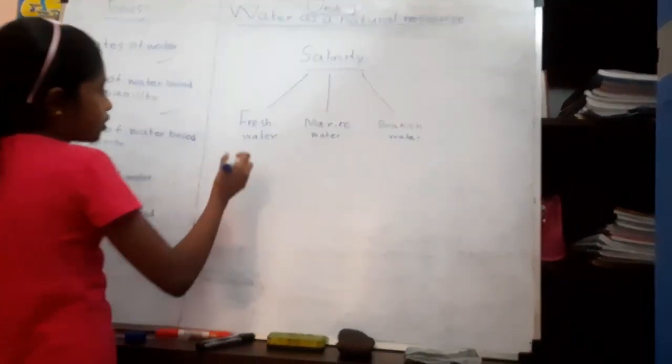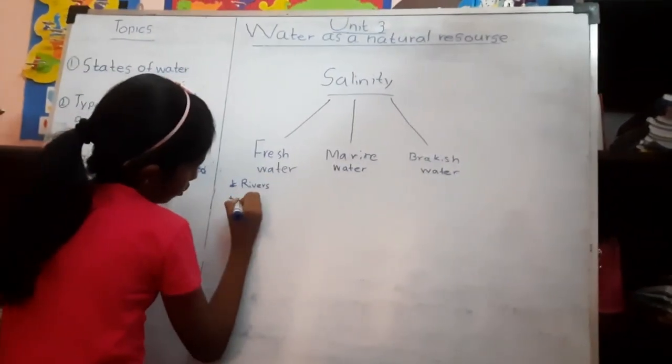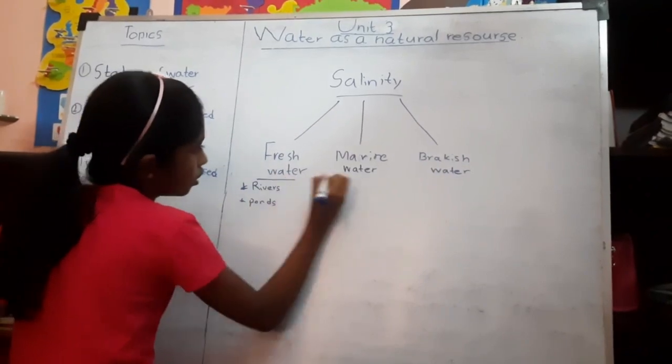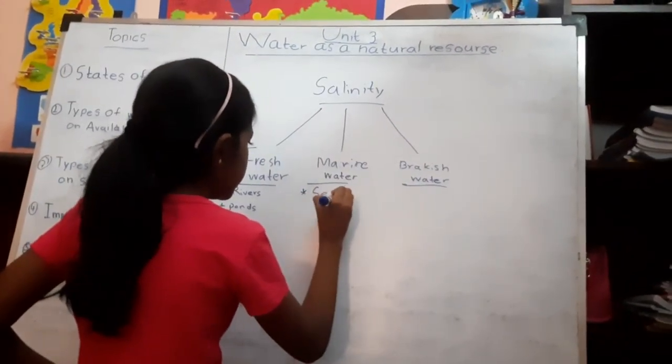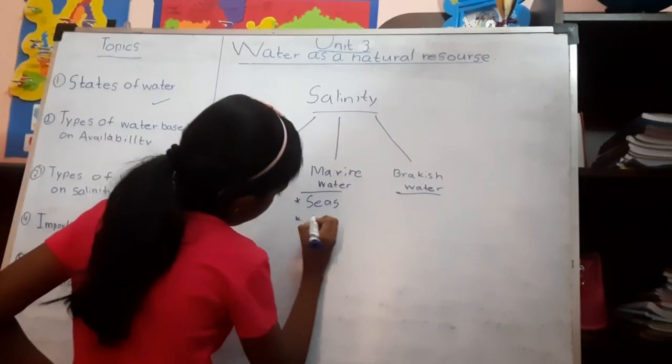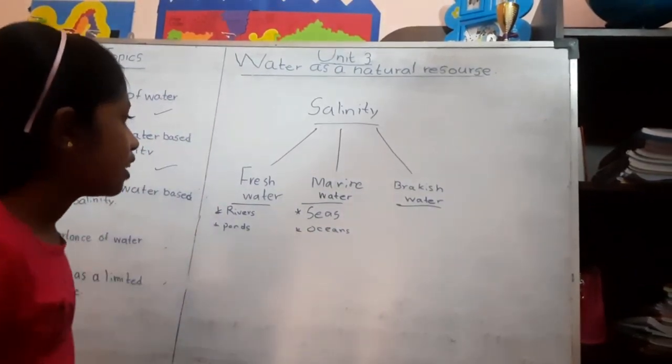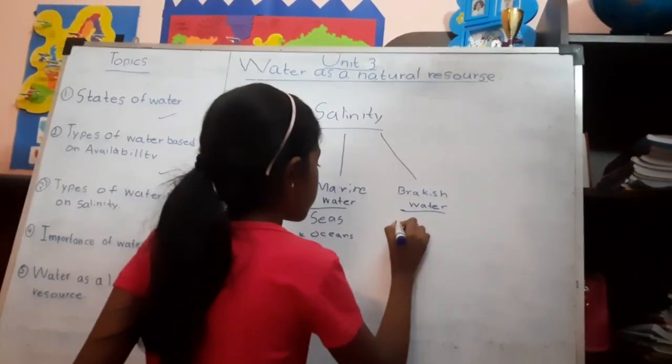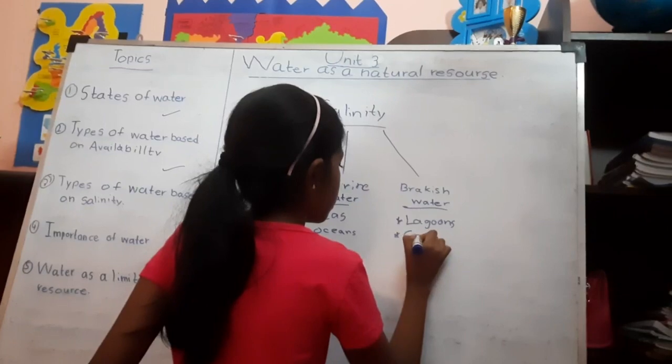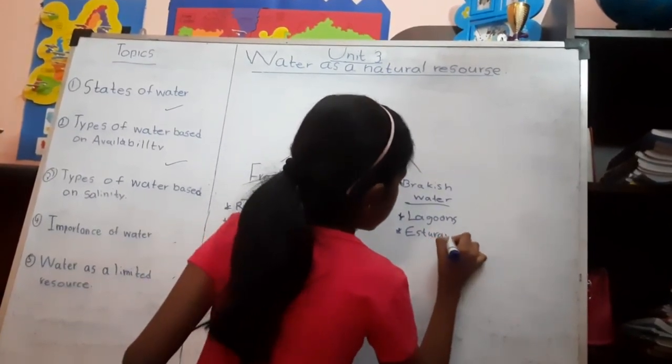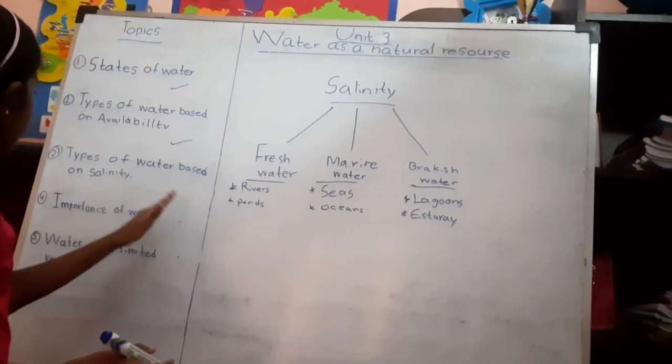Some examples for fresh water are rivers, ponds, like that. So we discussed the types of water based on salinity.